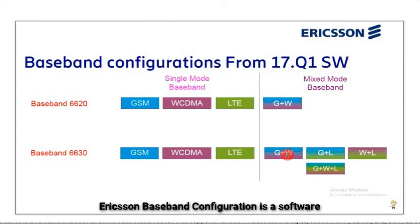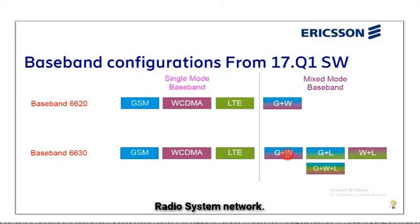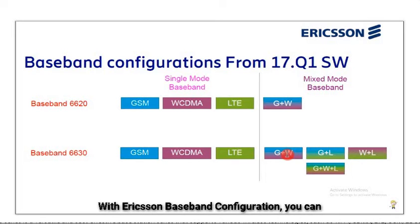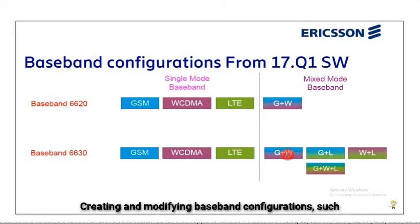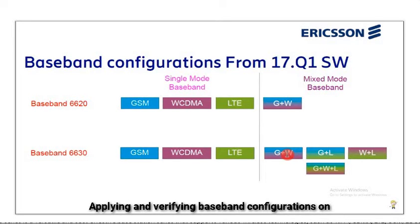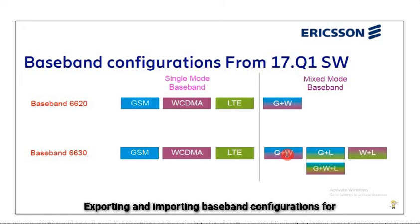Ericsson Baseband Configuration is a software tool that allows you to configure and manage the Baseband Units (BBUs) in your Ericsson radio system network. It supports Baseband 5216, 5212, 6648, and 6630. With it, you can create and modify baseband configurations (radio access technologies, frequency bands, carrier aggregation, MIMO settings), apply and verify configurations on one or multiple BBUs, monitor and troubleshoot baseband performance and status, and export/import configurations for backup and restore purposes.